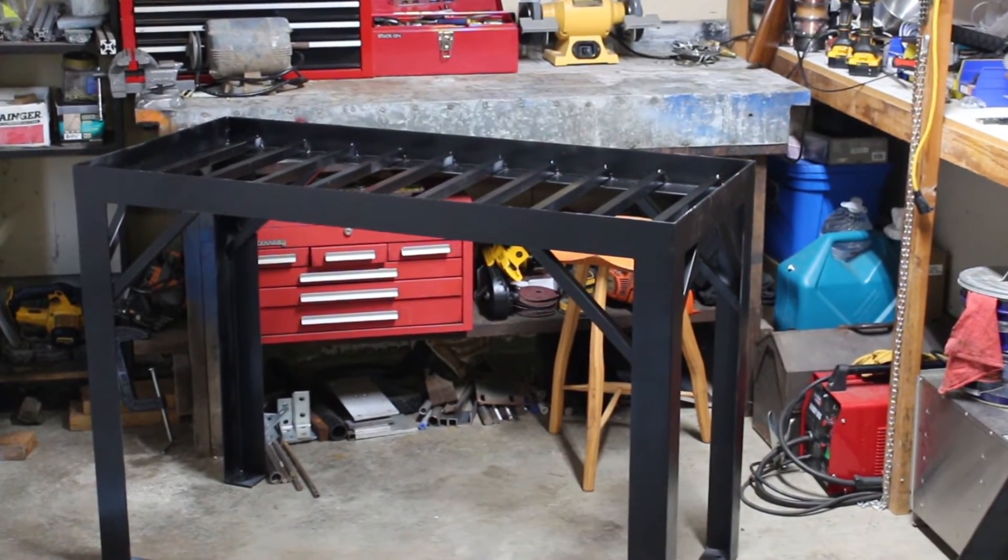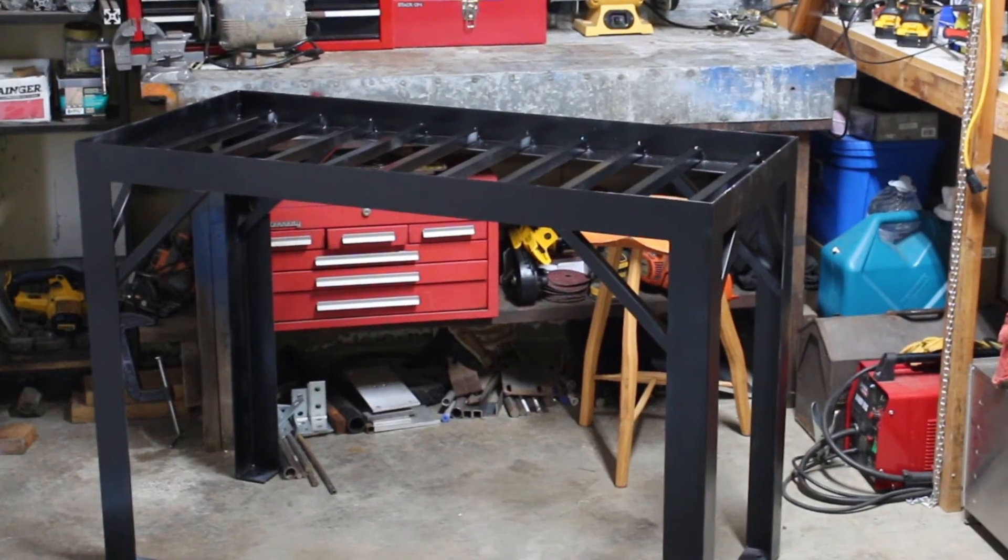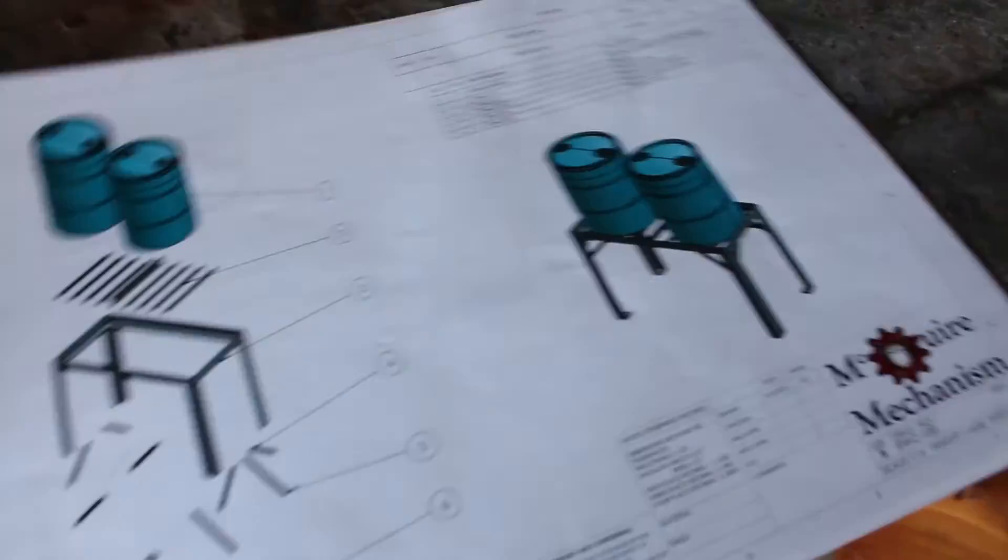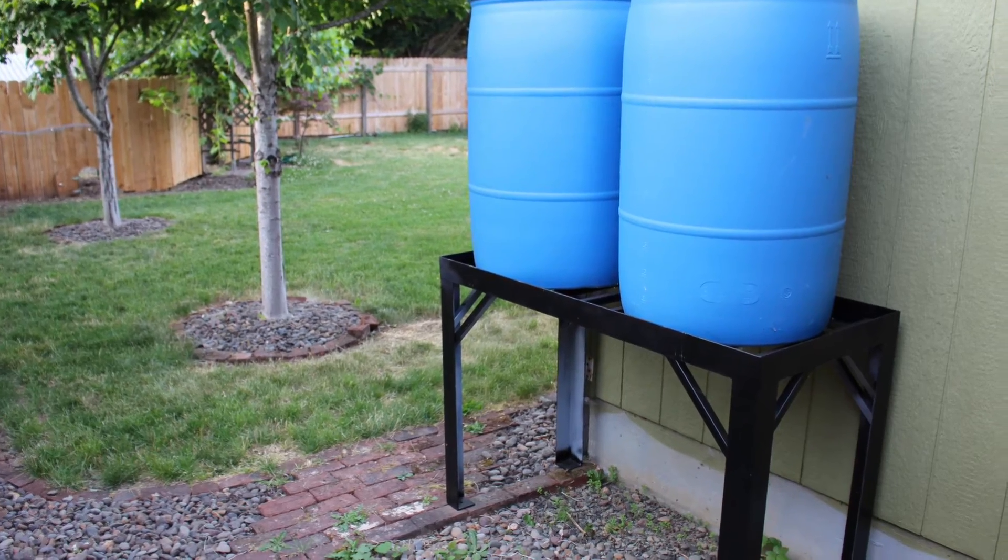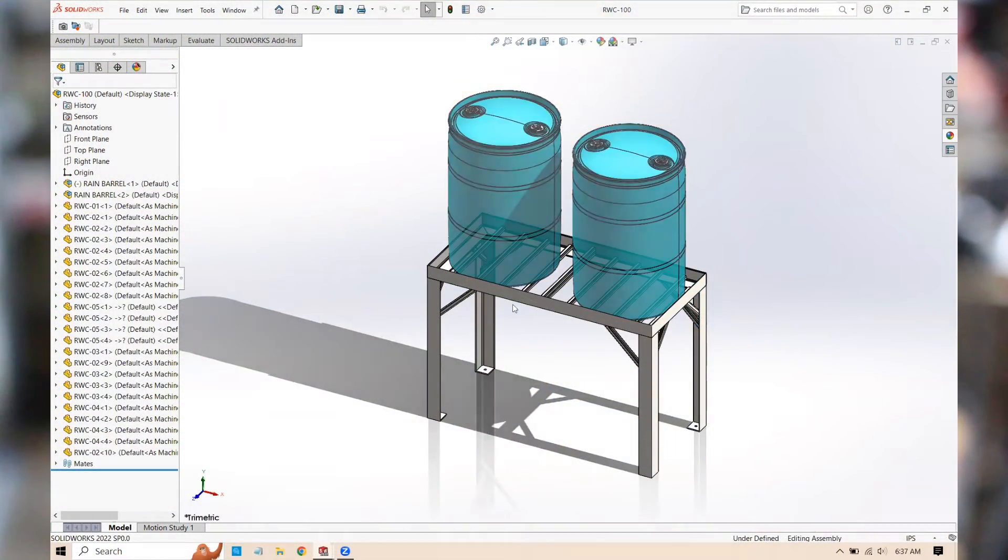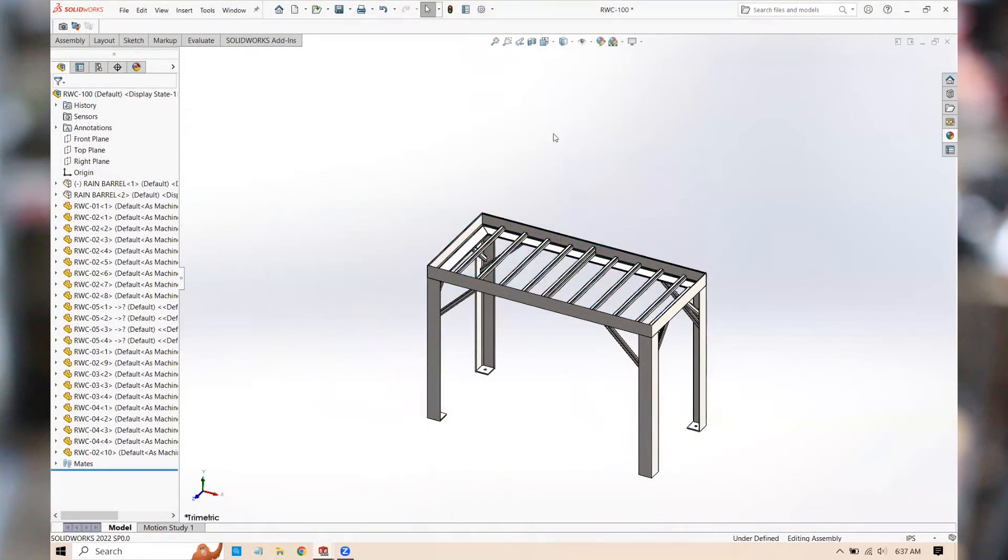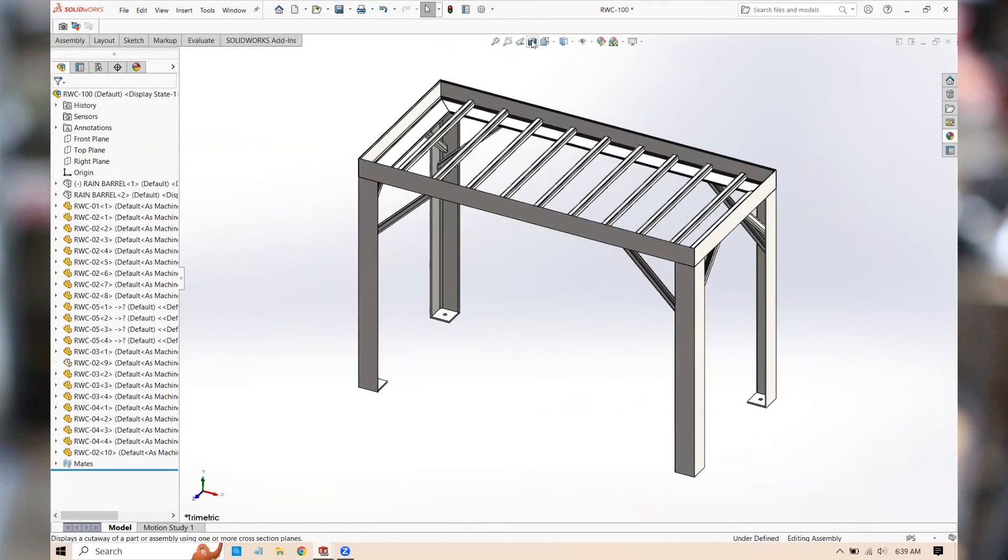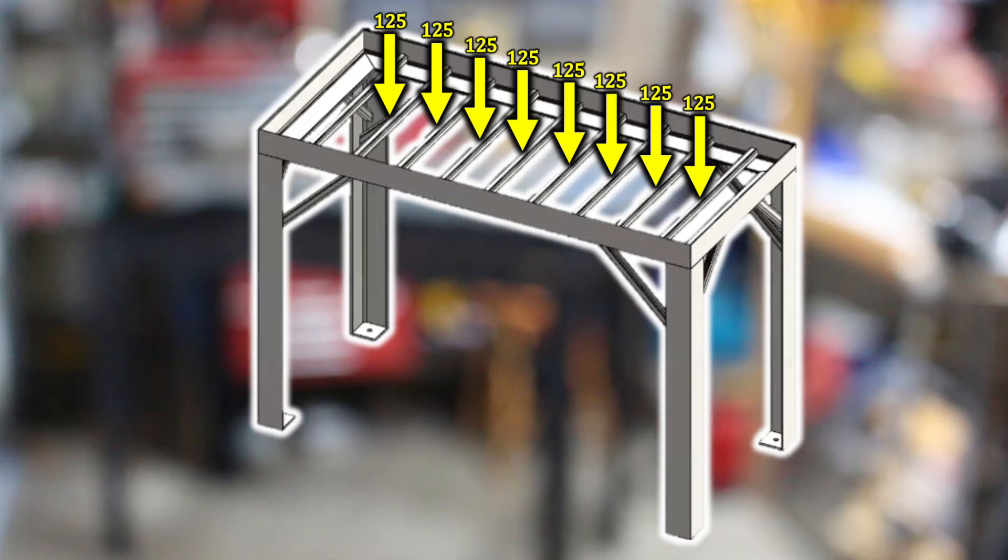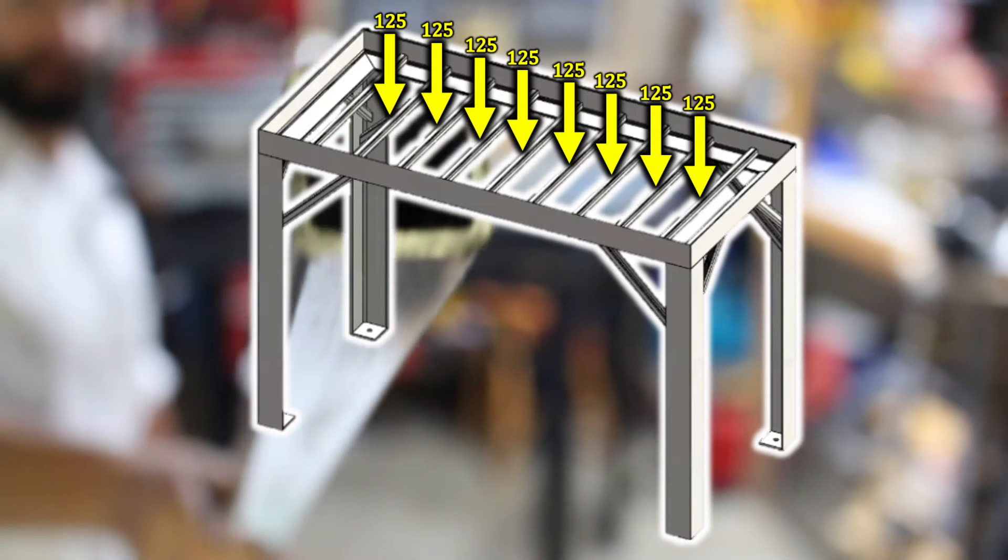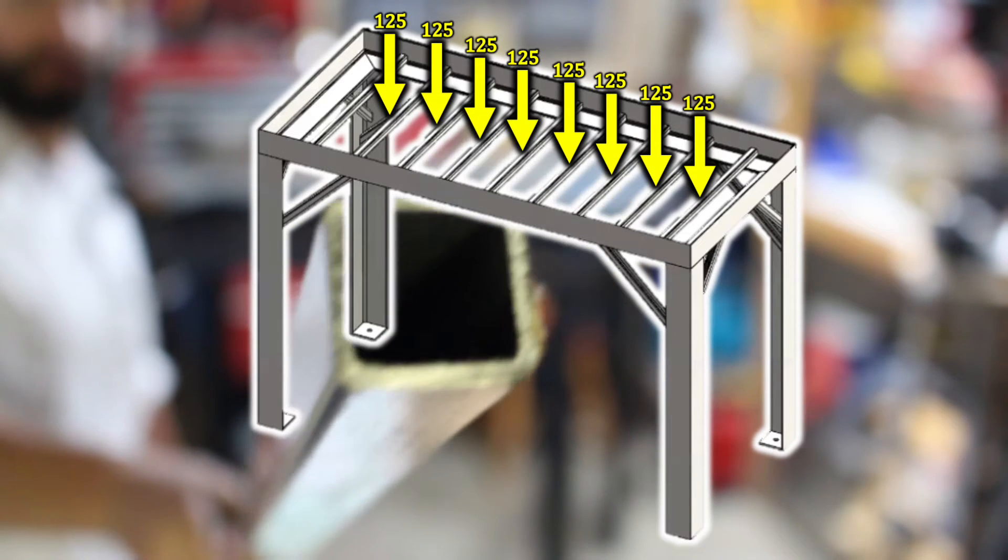This type of frame comes up all the time in structures and machine bases. This one is for a rainwater collection system raising two 55 gallon drums, or about a thousand pounds of water, three feet off the ground. Let's assume that thousand pounds breaks into a hundred and twenty five pounds per piece of square tube in the top of our frame.